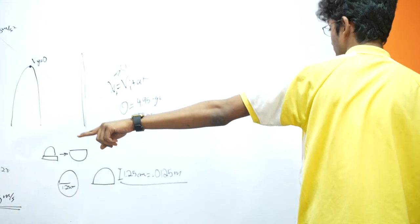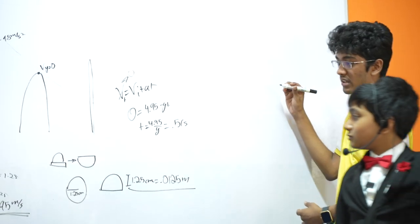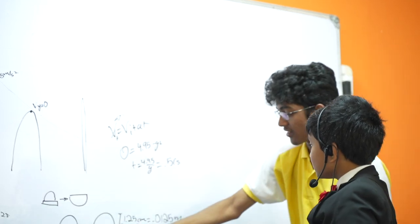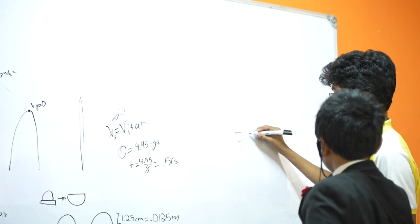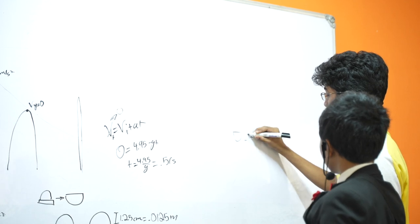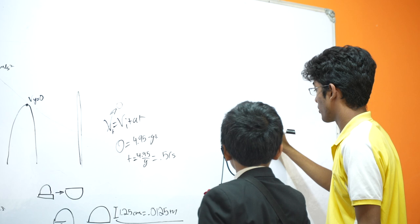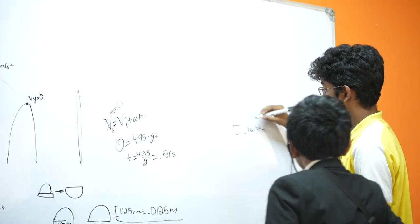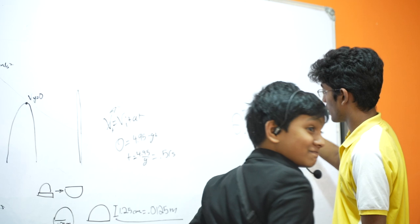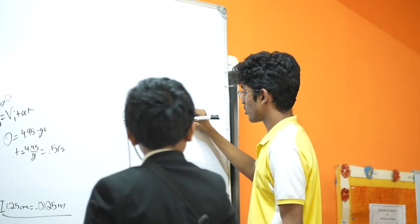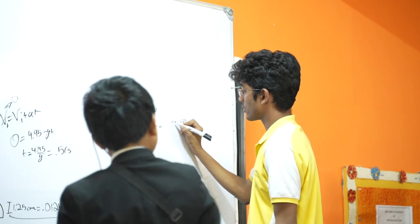Okay, I'm applying V squared equals U squared plus 2AS again. So now we know V, U, and we know distance S, since it goes from this position, which is 1.25, sorry, 0.0125 meters, to this way, which is another 0.0125.